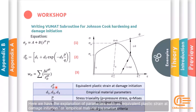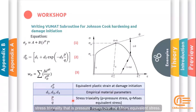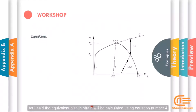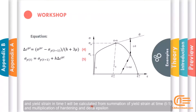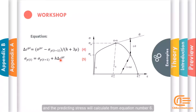Here we have the explanation of parameters such as equivalent plastic strain at damage initiation and empirical material parameters. Stress triaxiality is defined as pressure stress over the Mises equivalent stress, and WD is the damage initiation criterion. The equivalent plastic strain will be calculated using equation number 4, and yield strain at time t will be calculated from the summation of yield strain at time t minus 1 and the multiplication of hardening and delta epsilon.